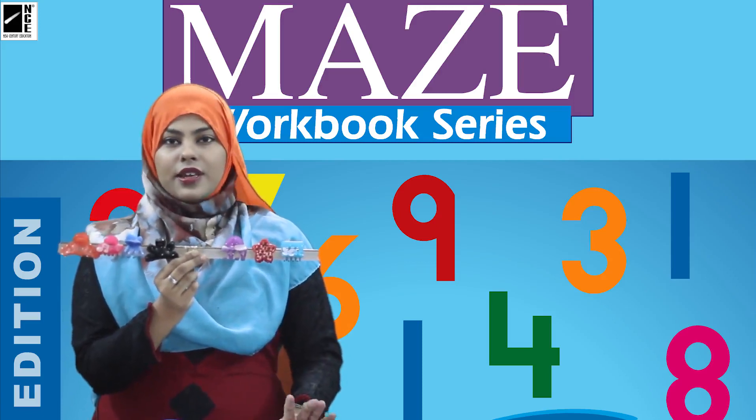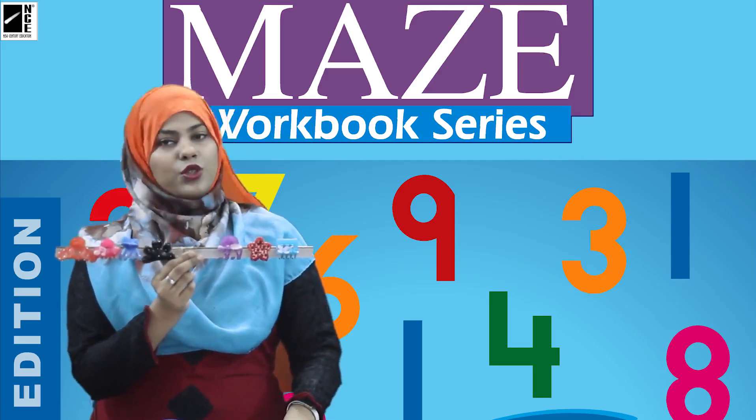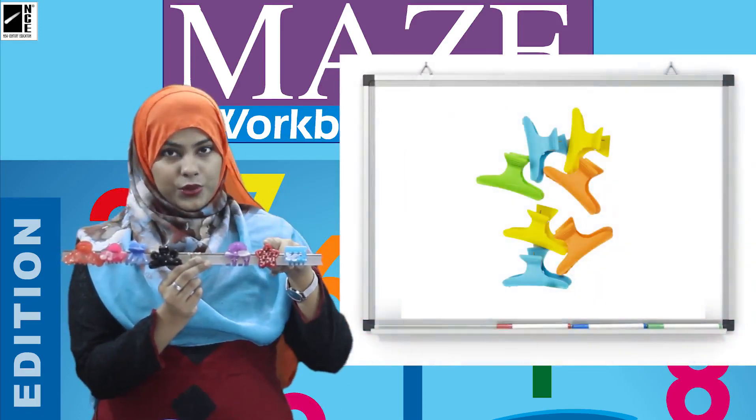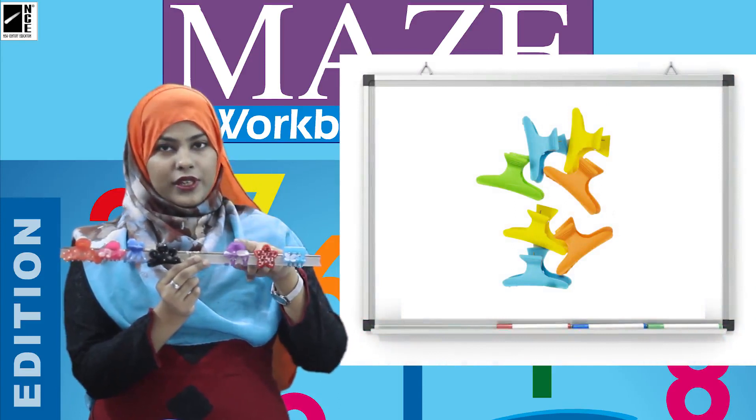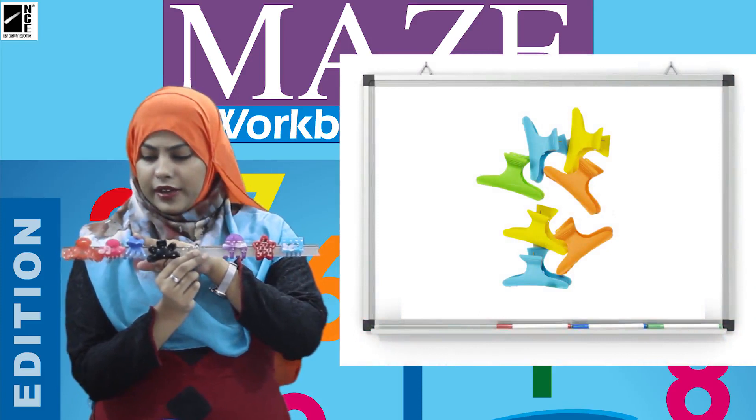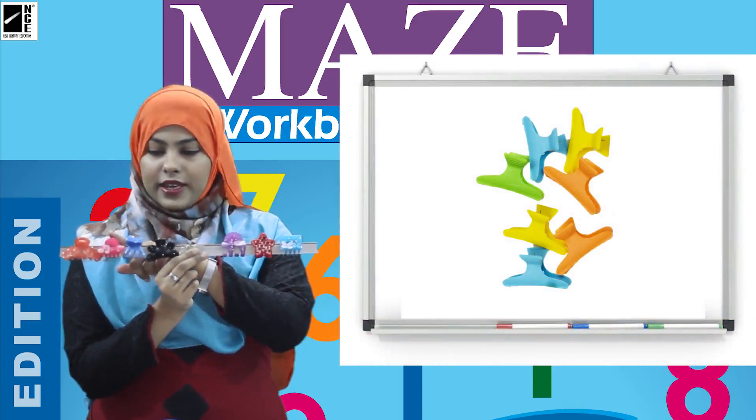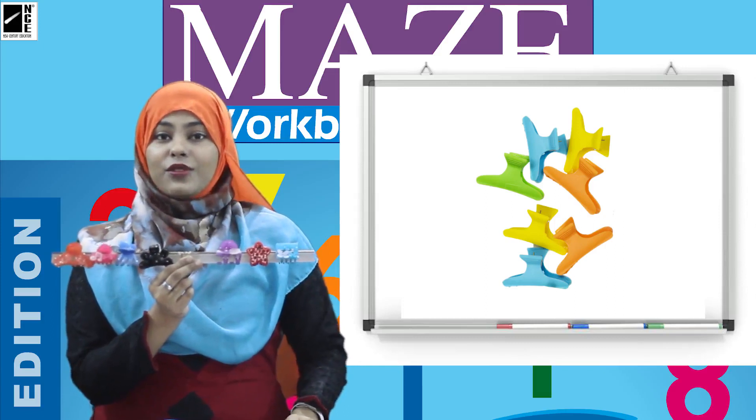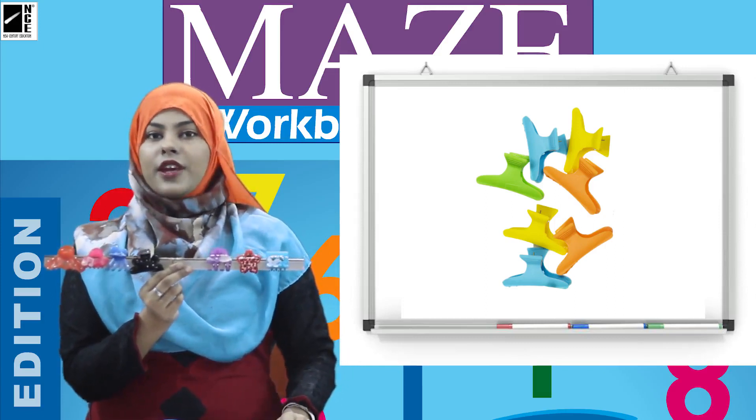Sure kar lete hain kya seven na, ab ne thik count kiya. So let's count again with me. One, two, three, four, five, six, seven. Okay, to hamne bilkul thik count kiya hai. To thik hai, ye to seven catchers hain.